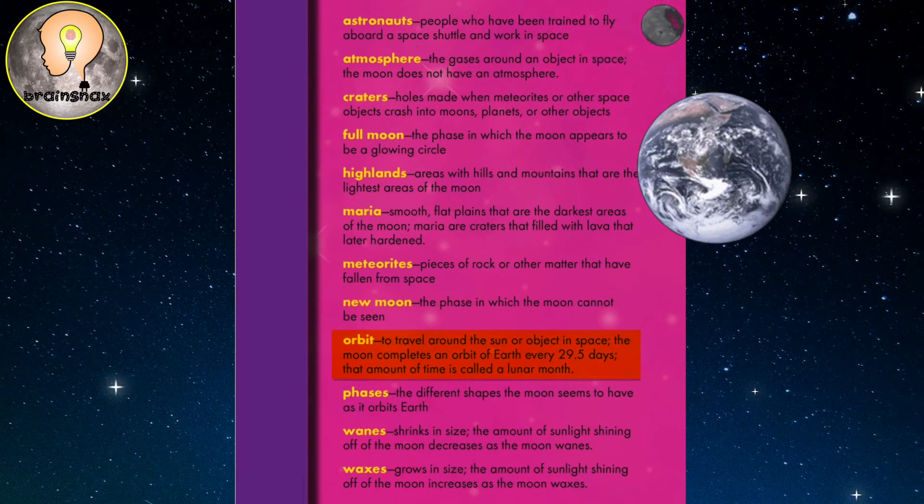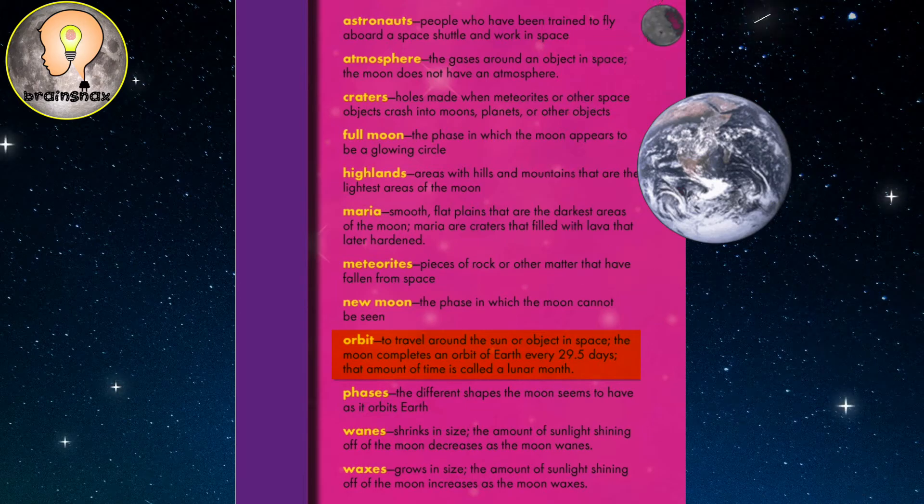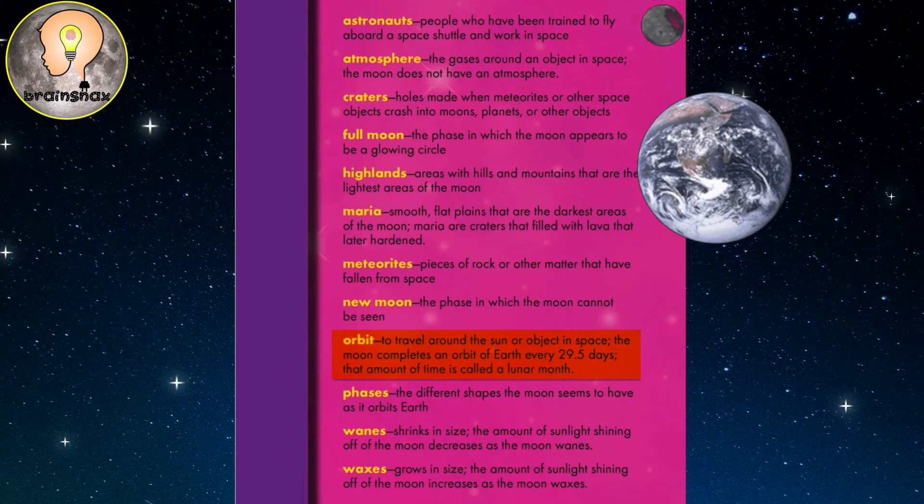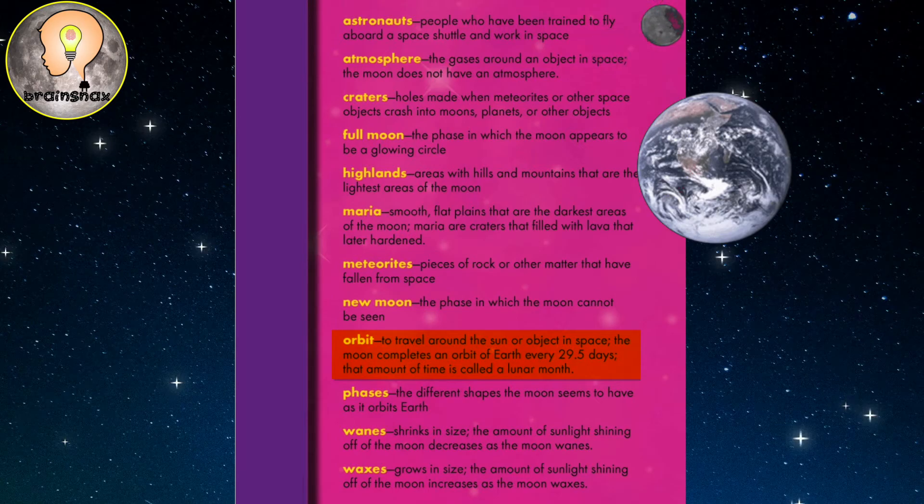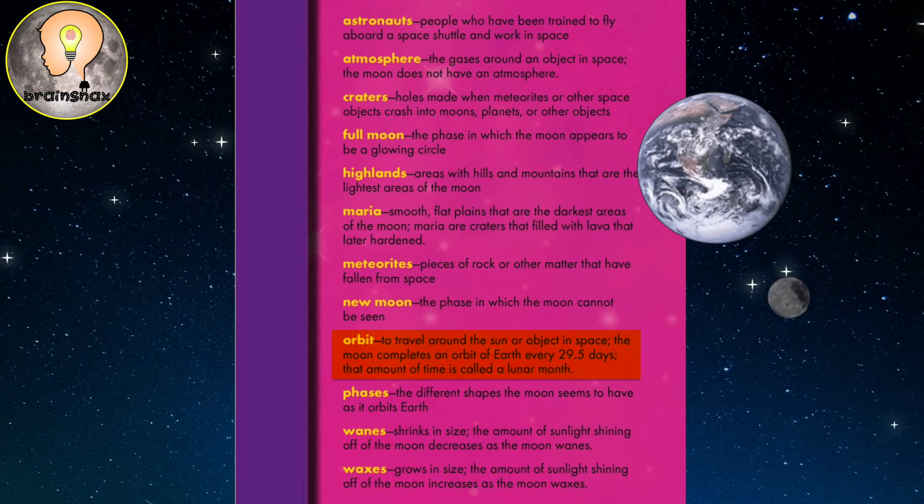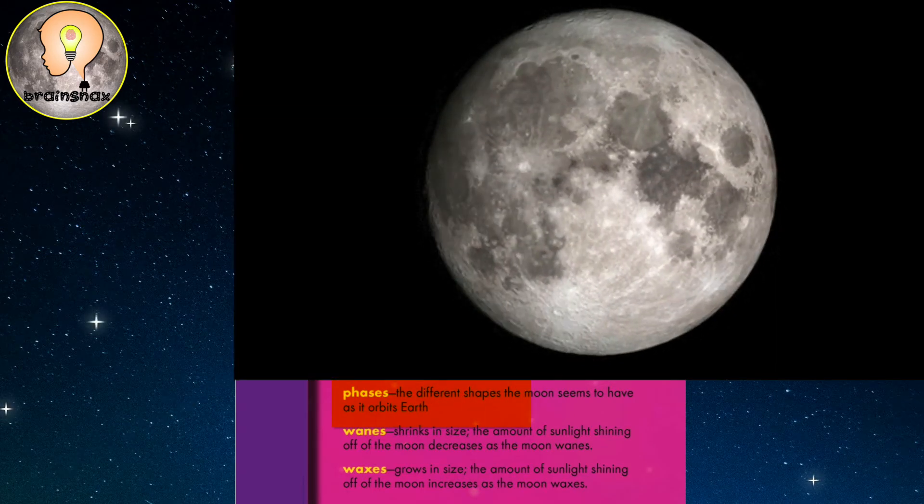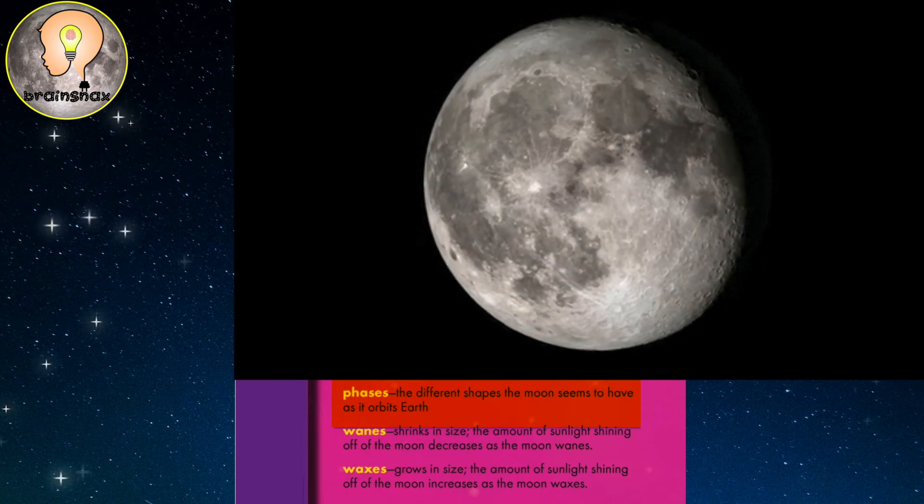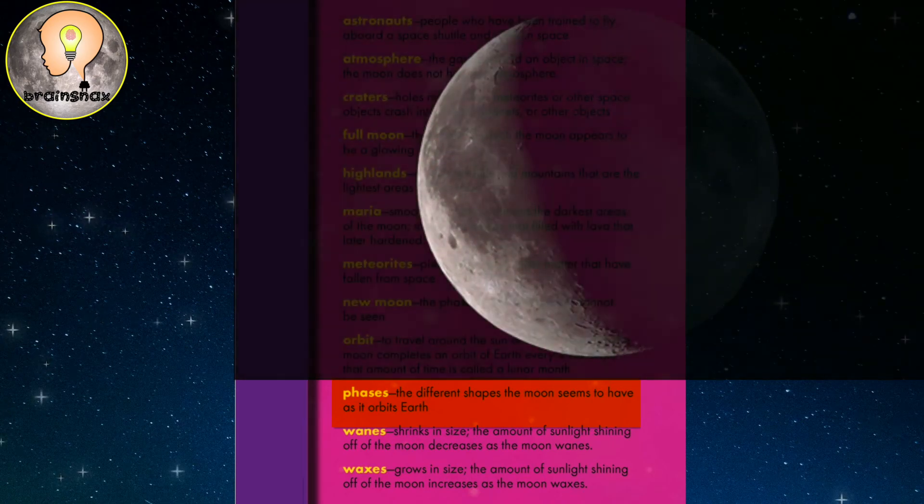Orbit: to travel around the sun or object in space. The moon completes an orbit of Earth every 29.5 days. That amount of time is called a lunar month. Phases: the different shapes the moon seems to have as it orbits Earth.